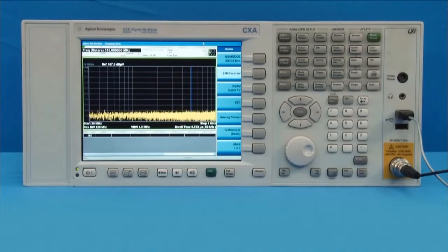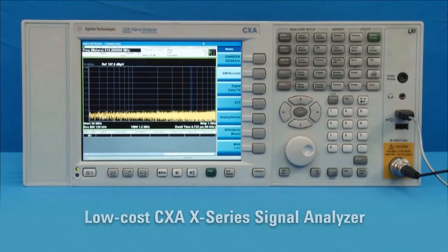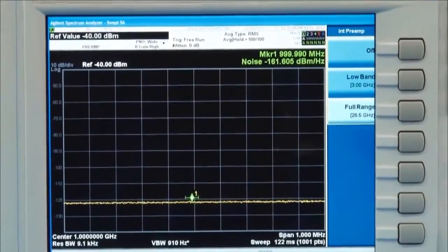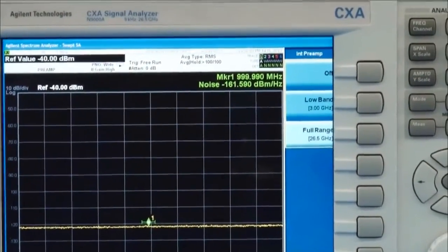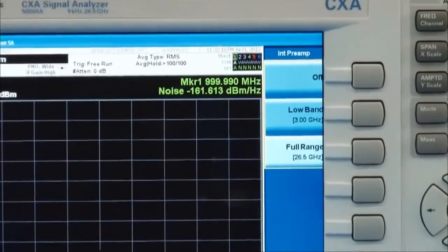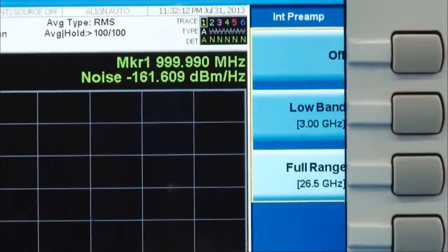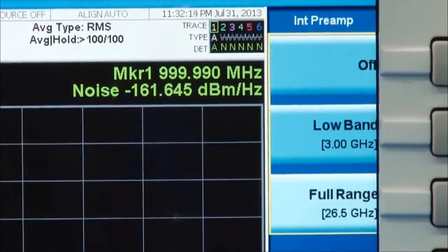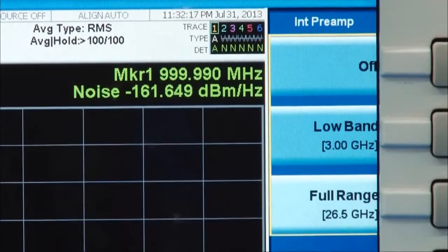Today, we are using the Agilent N9000A CXA Spectrum Analyzer with the EMI measurement application. The CXA is part of Agilent's X-Series of Spectrum Analyzers and is the most economical model. The sensitivity of the CXA exceeds 160 dB per mHz at 1 GHz and it is equipped with a full-range preamplifier up to 26.5 GHz.